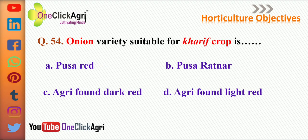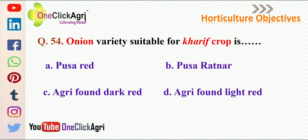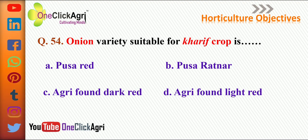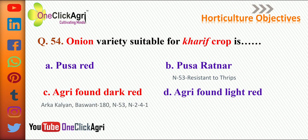Next question: onion variety suitable for kharif crop is Agrifound Dark Red. Also Arka Kalyan, Baswant 180, N-53, N-2-4-1, and Pusa Ratnar. N-53 and Pusa Ratnar are resistant to thrips.